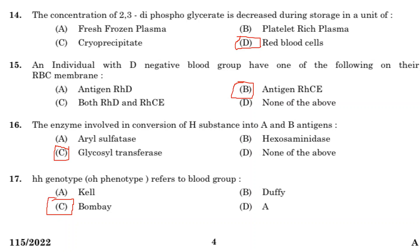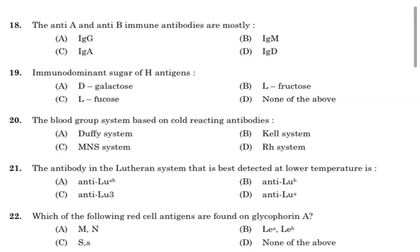Eighteenth question: the anti-A and anti-B immune antibodies are mostly. Option A: IgG. Option B: IgM. Option C: IgA. Option D: IgD. Answer is Option A, IgG.